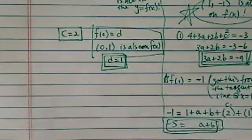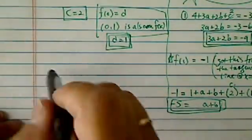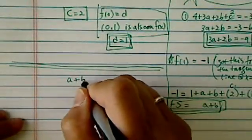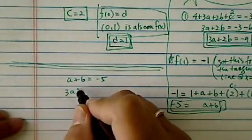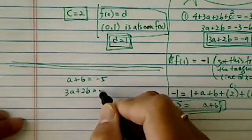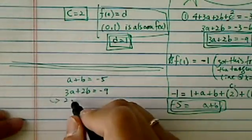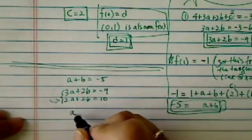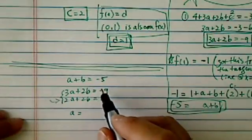Now having two equations and two unknowns, it's easy from here. We can simply solve. Let's make room. I have a plus b equals -5, and 3a plus 2b equals -9. Let's multiply the first by 2: 2a plus 2b equals -10.